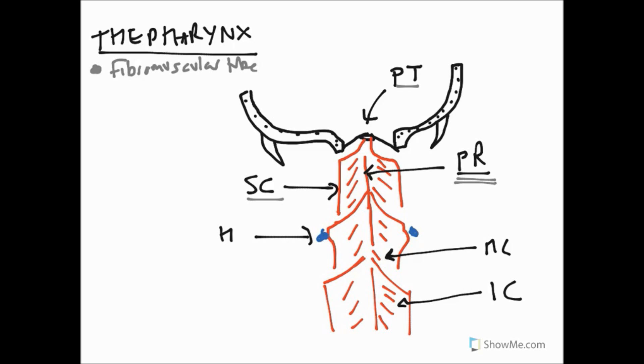And hanging off the back of that we have the joining of the superior constrictor that travels around in a tube and joins on each side and eventually attaches to the pharyngeal tubercle. Filling in the gap at the top we actually have some connective tissue, some fascia at the top there, and that's known as the pharyngeal fascia.